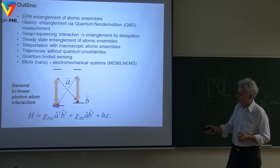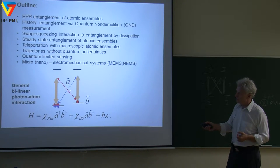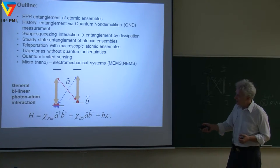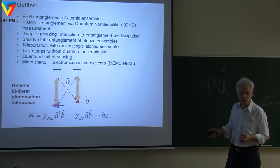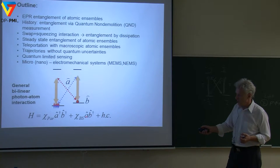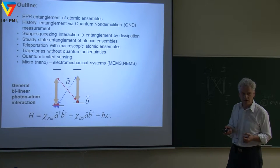There could also be another process: light coming in contains a photon, and I can take this photon and scatter it into the strong field — this photon disappears and an atomic excitation appears. This is the part of the Hamiltonian involving annihilation of a photon and creation of an atomic excitation. This is good for the exchange of quantum states between two systems.